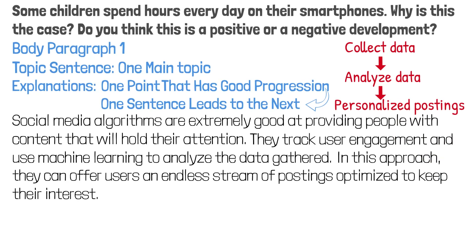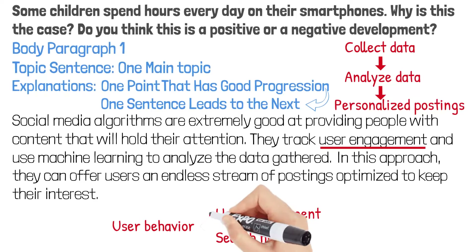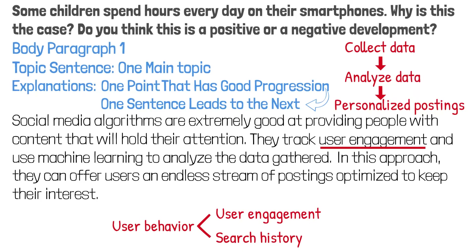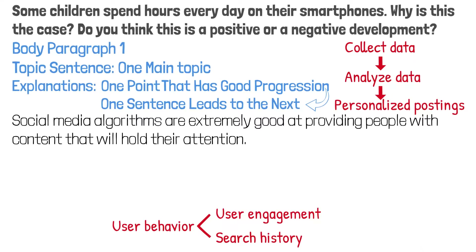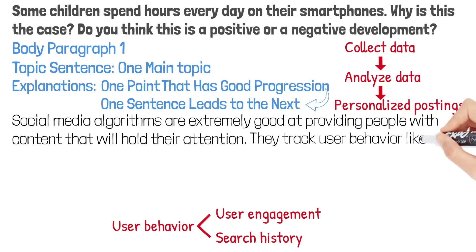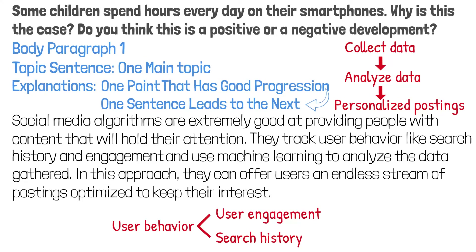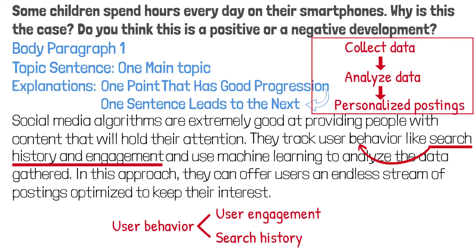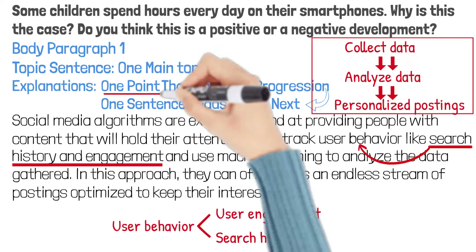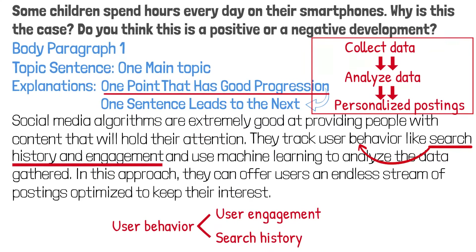Now I'm going to show you how to improve this part. In general, algorithms track user behavior — engagement and search history are just two aspects of user behavior that they track. So we can change this to: 'they track user behavior like search history and engagement.' This is not listing items; this is using examples to support 'user behavior.' Now do you see the progression in the explanations? Do you see how one idea flows to the next? It's so important to focus on only one point and have good progression in our explanations.